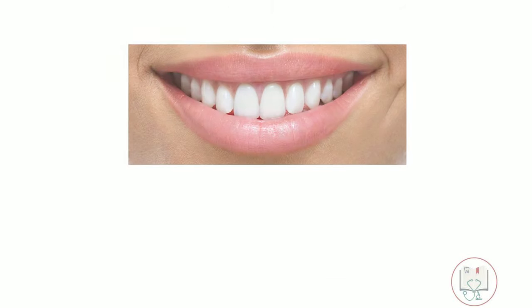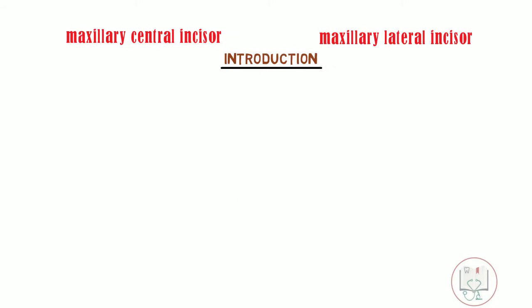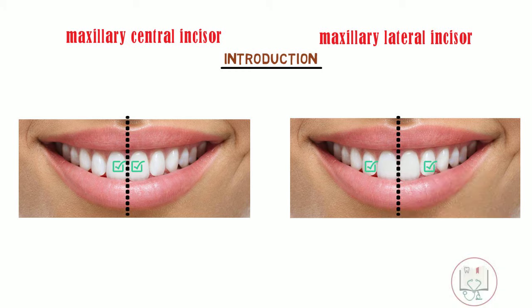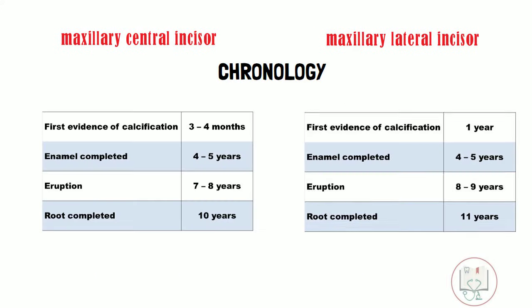Features of the permanent maxillary central incisor and lateral incisor are very similar, which makes it important to know even the smallest differences between the two teeth. Starting with some general features: the central incisor is the first tooth from the midline and the lateral incisor is the second. This gives the two teeth different tooth numbers in various tooth notation systems. Chronologically, the lateral incisor erupts just around one to two years after the eruption of the central incisor.